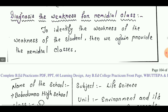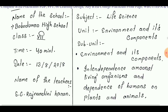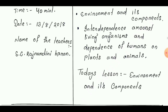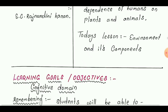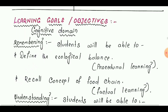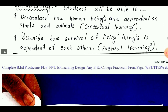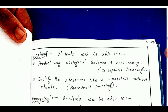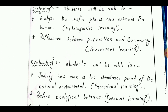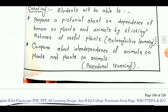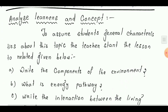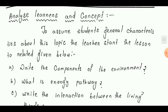Learning design number 17 is taken from Class 7. The lesson is 'Environment and its Components.' The learning goals and objectives are: remembering, understanding, applying, analyzing, evaluating, and creating. Next point is analyze learner and concept.